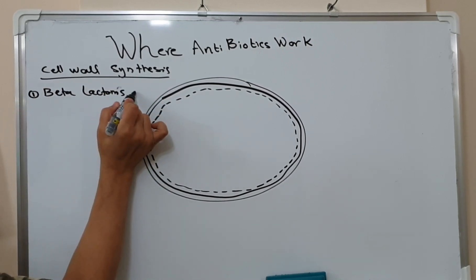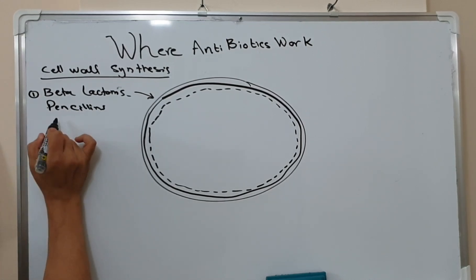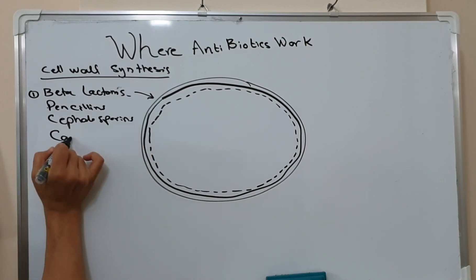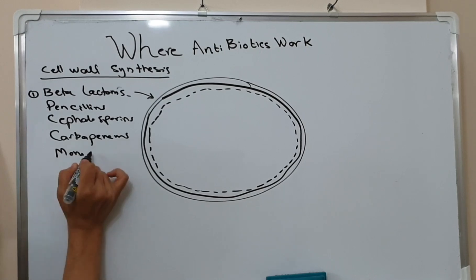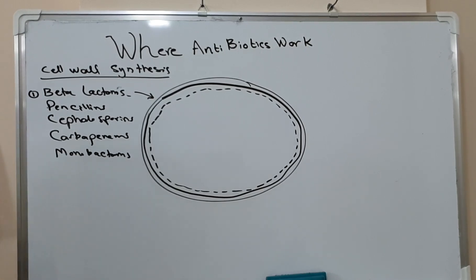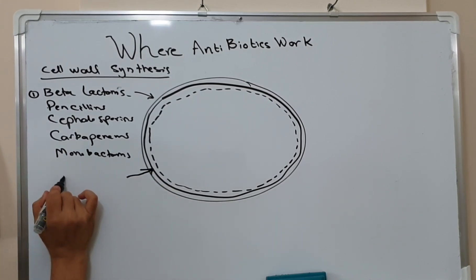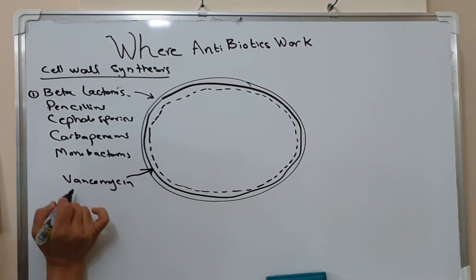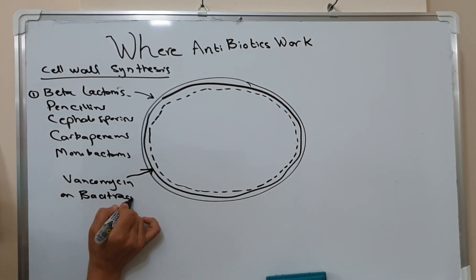The first group is the beta-lactam antibiotics, and this includes all types of penicillins, all types of cephalosporins, carbapenems, and monobactams. The second group works on bacitracin, and this includes vancomycin.